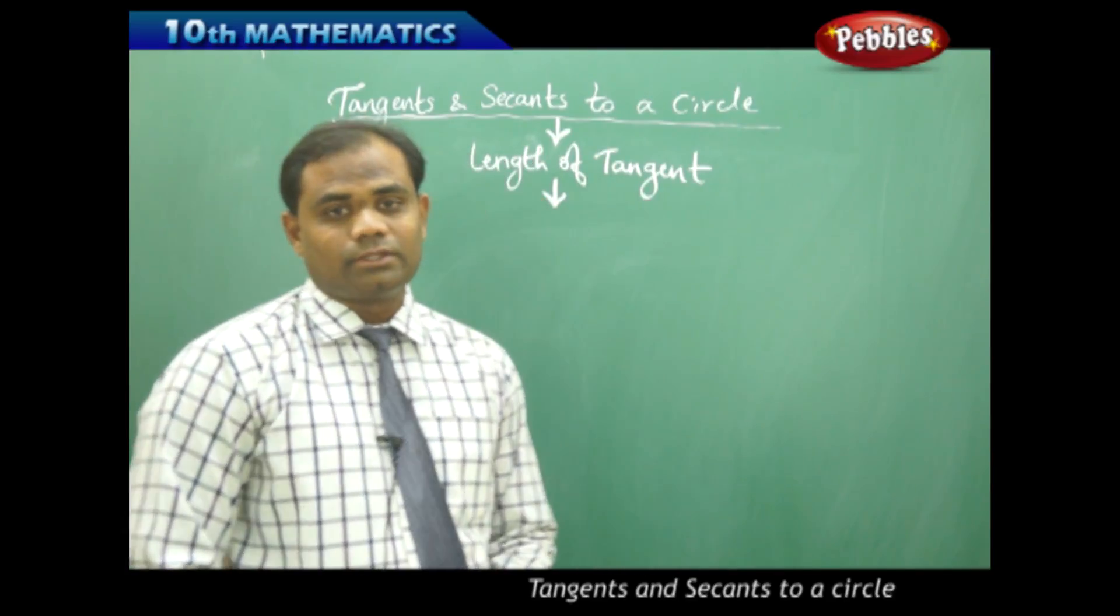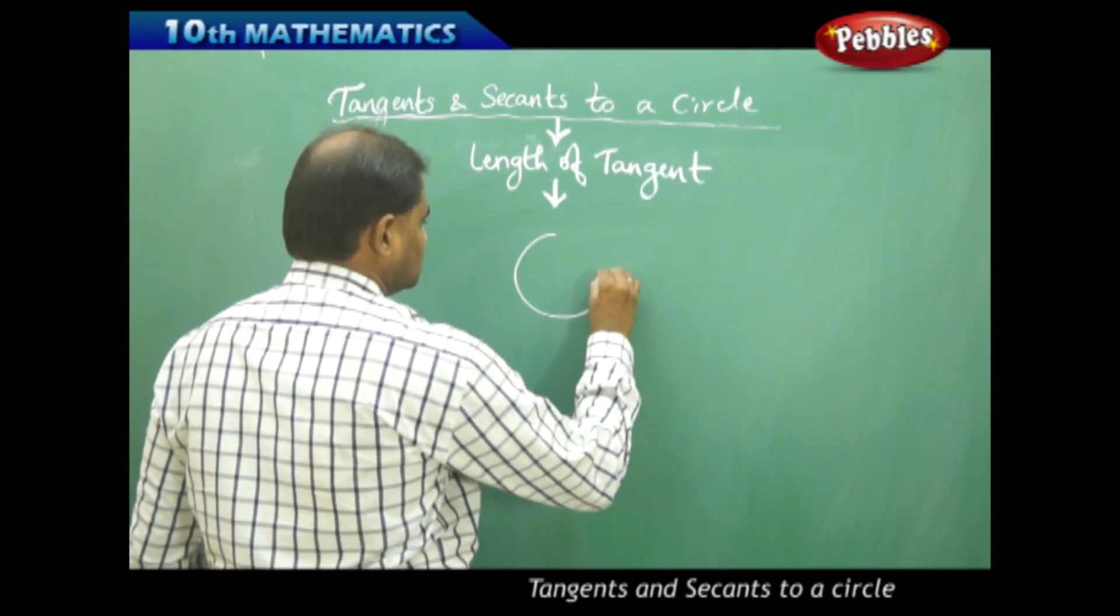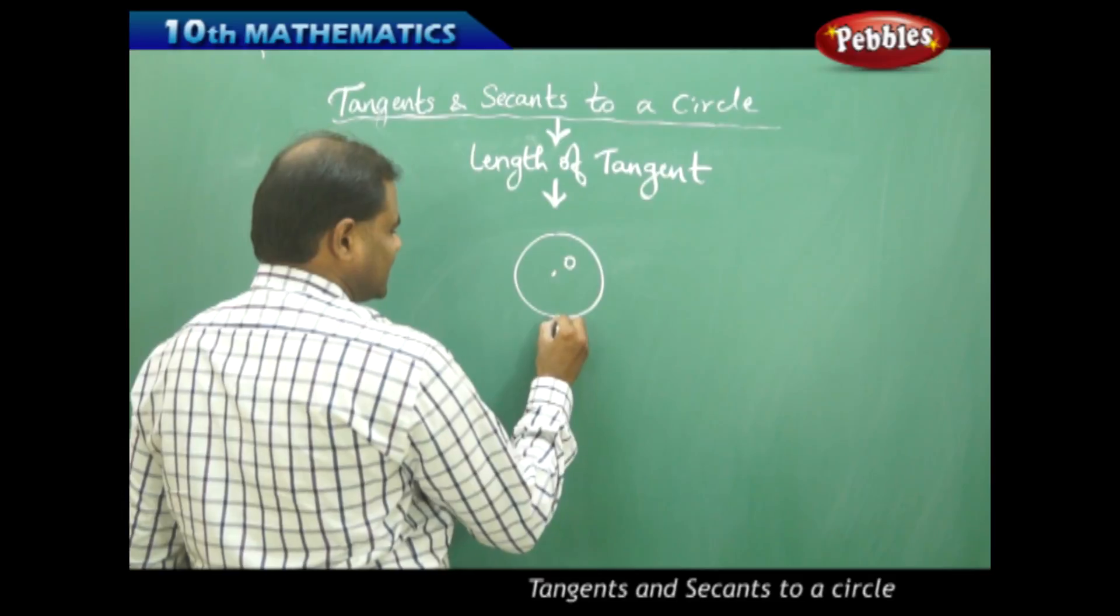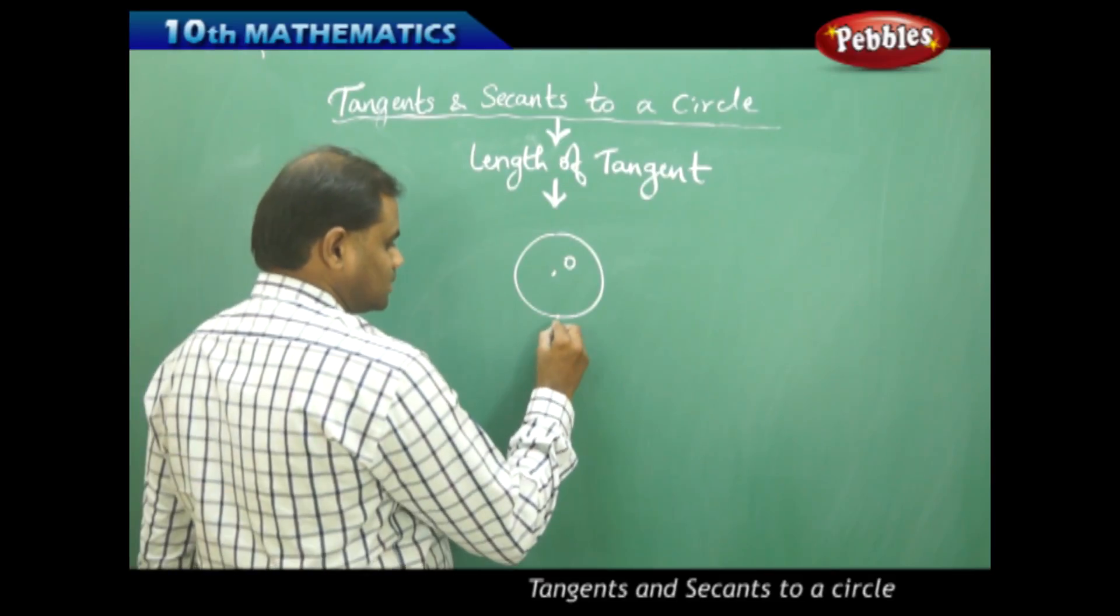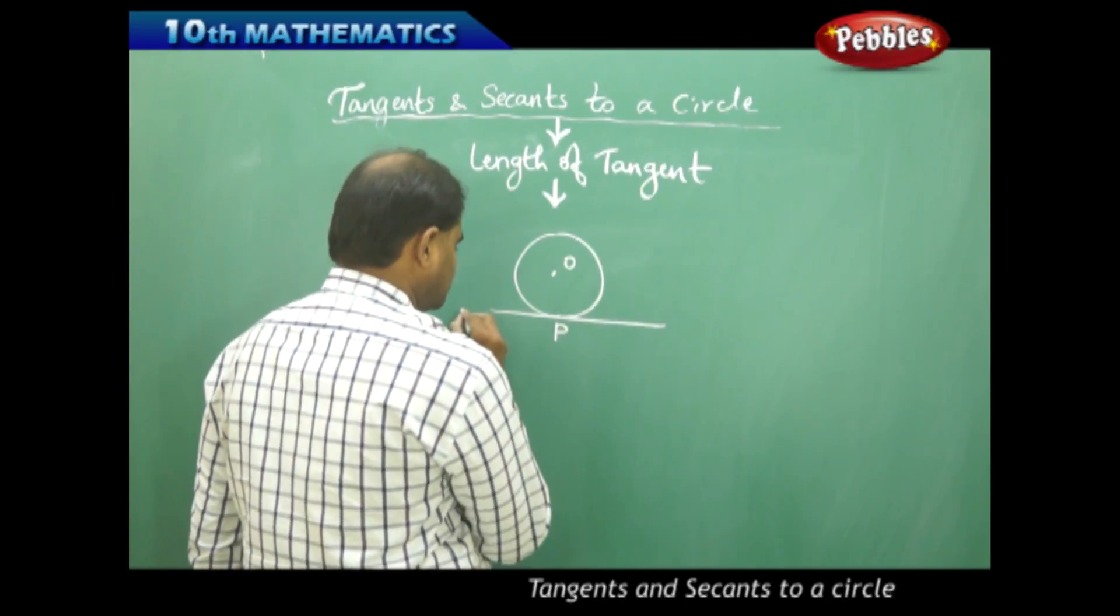So to start with, let's take a diagram. I take a circle with centre O and say I have my tangent at the point P. Say at P I have a tangent.